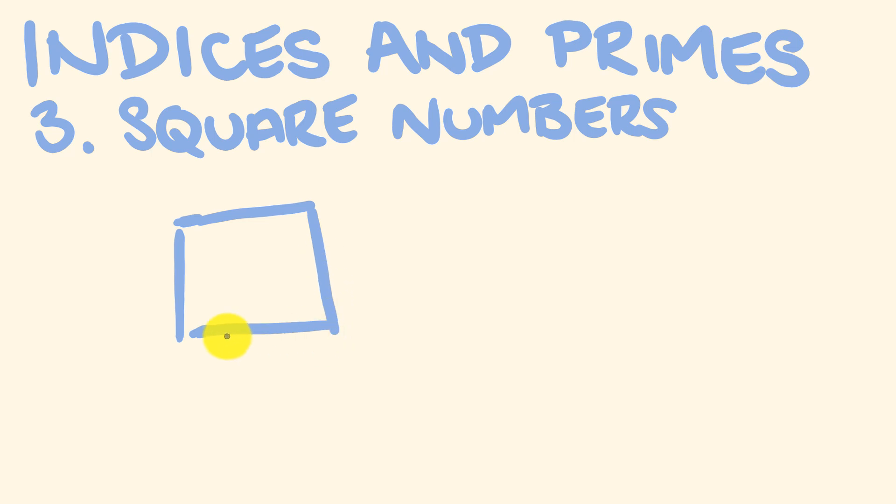So say the length of this square was 2 meters and the width was 2 meters, the way we'd work this out is 2 times 2, which equals 4. Okay, so this is what a square number is—it's just a number multiplied by itself.